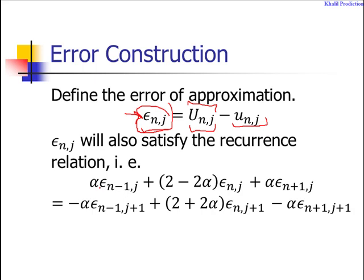Since capital U and small u both satisfy the reconciliation, the error of approximation also satisfies it. Designing the reconciliation for the error, we get: alpha e_{n-1,j} + (2 - 2α)e_{n,j} + alpha e_{n+1,j} equals minus alpha e_{n-1,j+1} + (2 + 2α)e_{n,j+1} minus alpha e_{n+1,j+1}. This relates the error at the forward stage with the error at the previous stage.